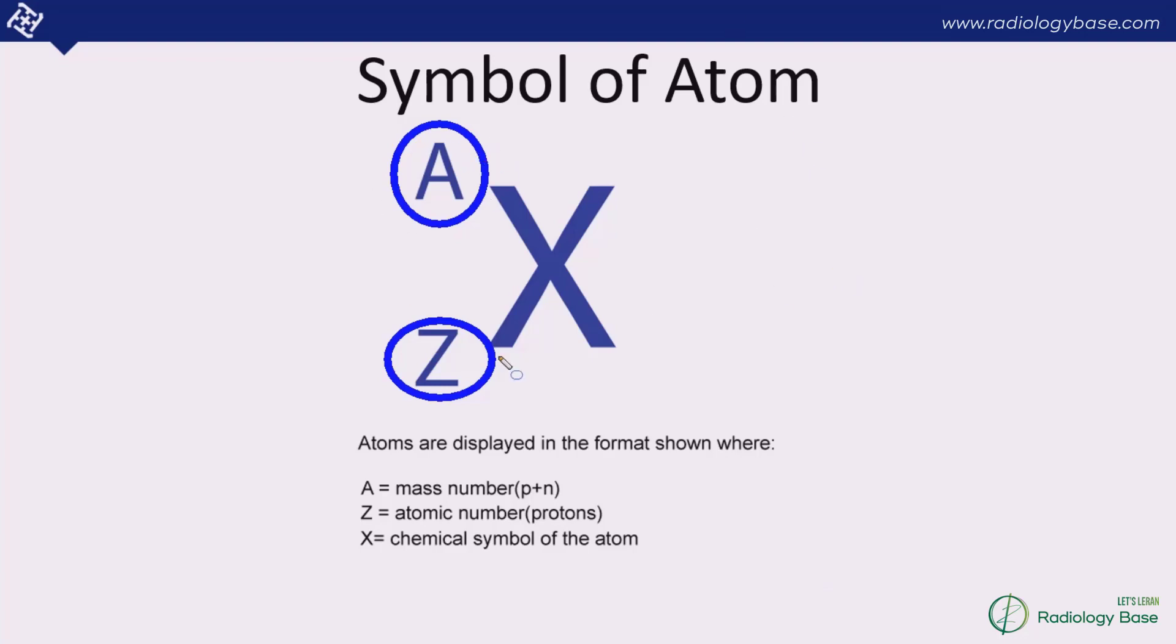We can have same Z number with different A number. If we have carbon-12 it has Z number 6, containing 6 protons and 6 neutrons, so it's 12. But if it is carbon-14, Z stays the same at 6 whereas A changes from 12 to 14.